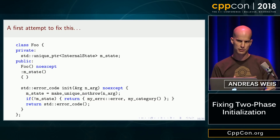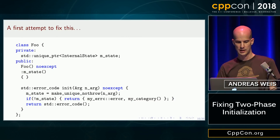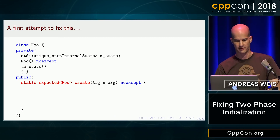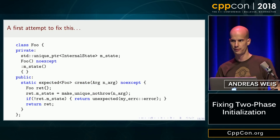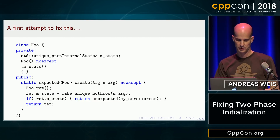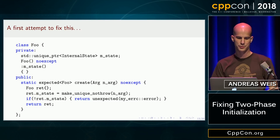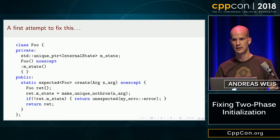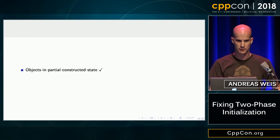A first attempt to fix this — if you look up Boost.Outcome, they have a whole chapter on it — is to make the constructor private, and then instead of an init member function, add a static create member function. That one performs both the constructor call and the actual construction of the state. Since the constructor is private, you can only construct new objects through the create function, and since that performs both steps of two-phase initialization, you can no longer get those partially constructed objects.